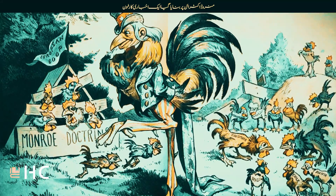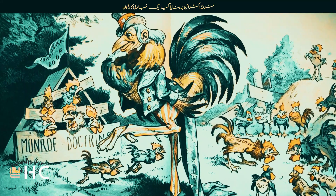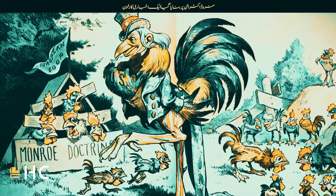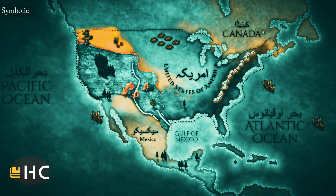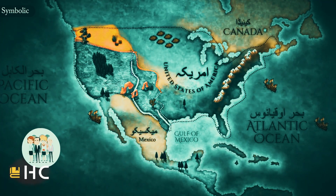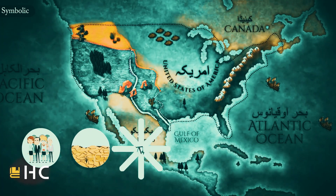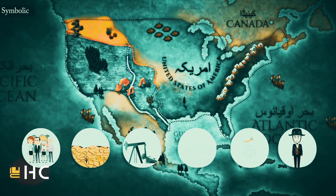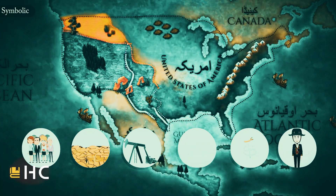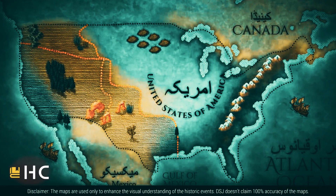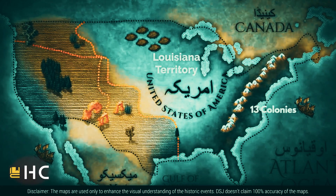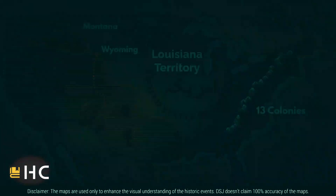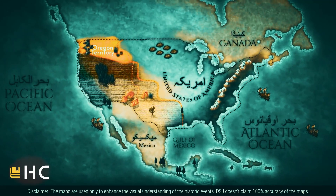The Monroe Doctrine was an important step towards making America a superpower, giving America an important role in the region. But only policy statements don't make a country a superpower. A country needs strong manpower and intelligent leadership, large areas, natural resources, vast maritime territory, a strong economy, and a powerful army. America's resources were still not enough — its lack of power made the Monroe Doctrine unimportant. At that time, only 13 colonies and the Louisiana Territory were part of the US.